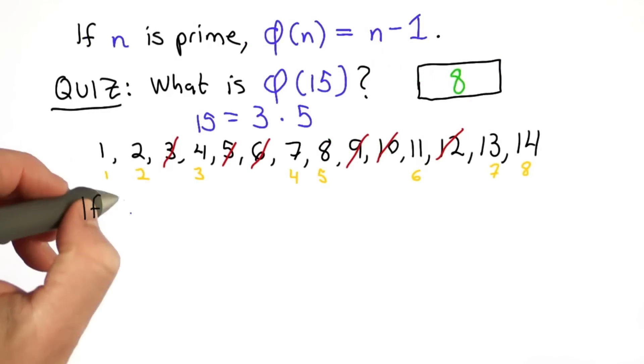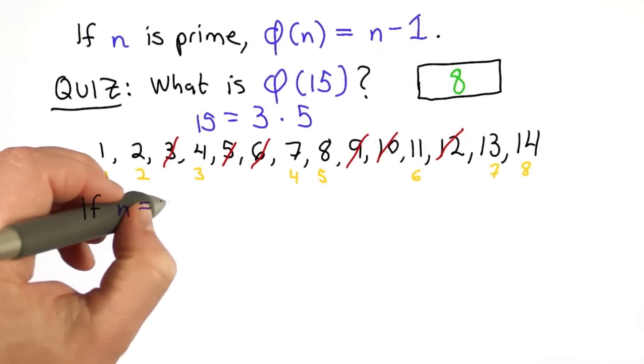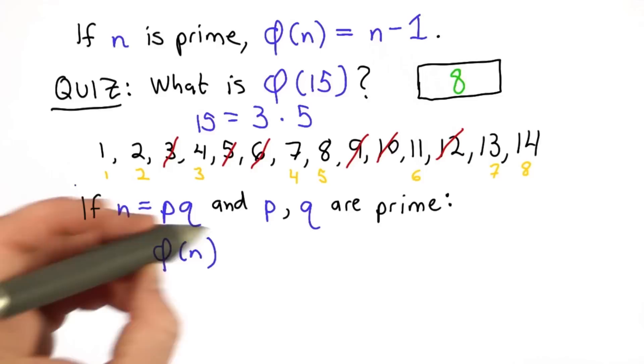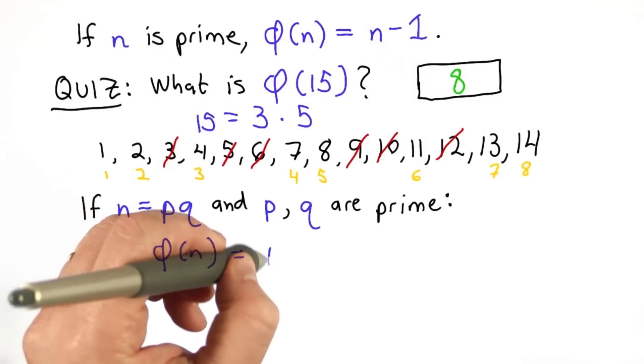This works in general. If we know that n is the product of two primes, then we can compute the totient of n. It's the number of integers less than n, which is also pq-1.